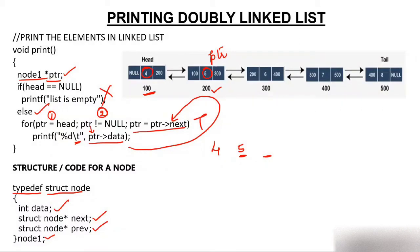I'll increment PTR. PTR will have PTR->next. What is PTR->next? 300. So PTR will move from this node to the 300 node. Again, I'll check: is PTR not null? Yes, PTR is not null because PTR is 300, condition becomes true. I'll move inside and print PTR->data, which is 6. So I'll print 6. This tab will give me the space.